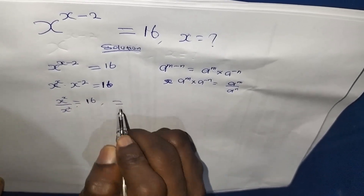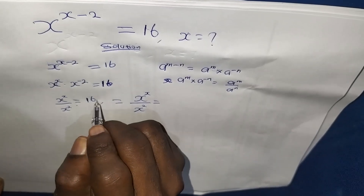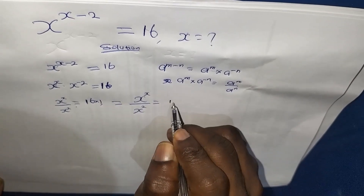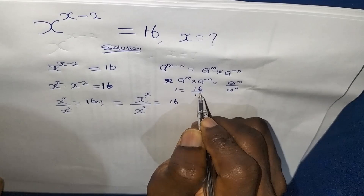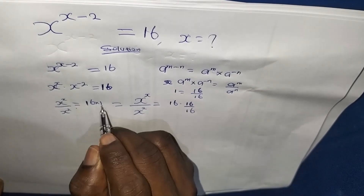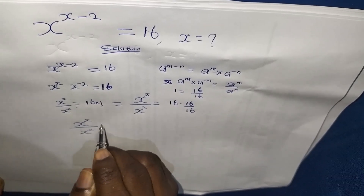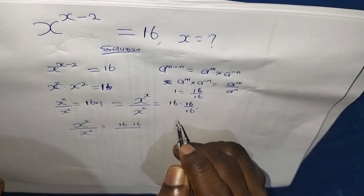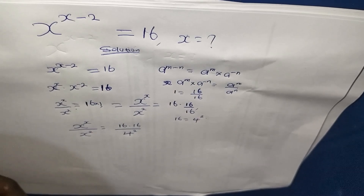So we are having x to the power of x over x to the power of 2 equals 16. Now I can write 16 as 16 times 1, and since 1 is equals to 16 divided by 16, I can substitute that in. Then I can break 16 down: 16 is equals to 4 to the power of 2. So I put 4 to the power of 2 in place of 16.